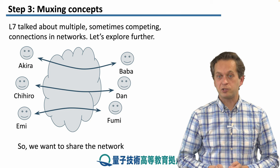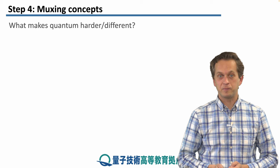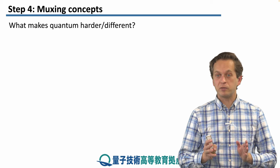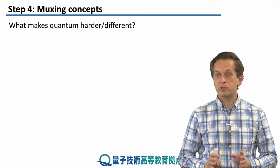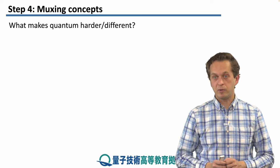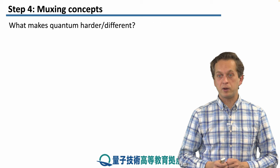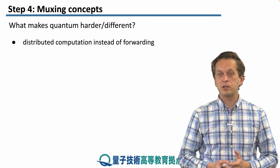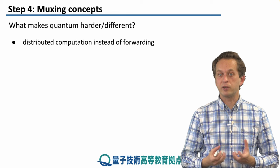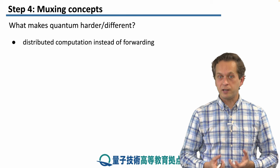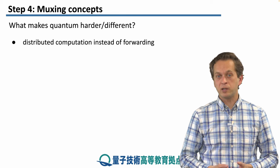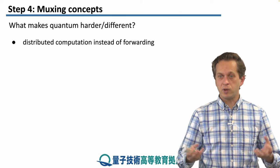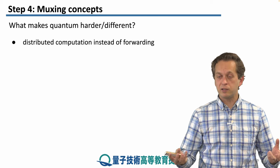We would like to share a network — how do we do it? First, we're going to think about what's different and what's harder about quantum networking when compared to classical networking. Classical networking is all about forwarding packets. On the other hand, quantum networking is more like a distributed computation, with nodes that are trying to cooperate.